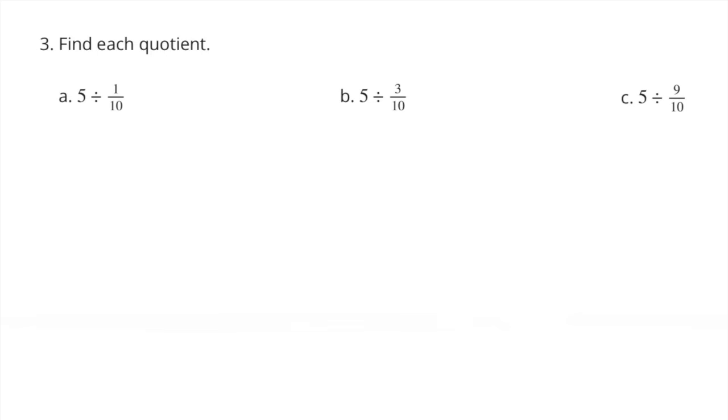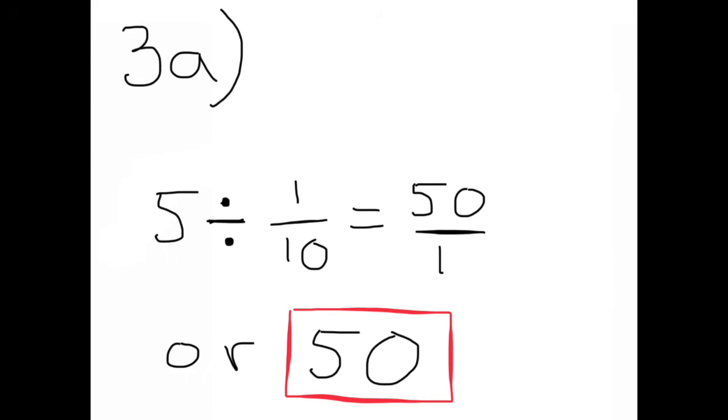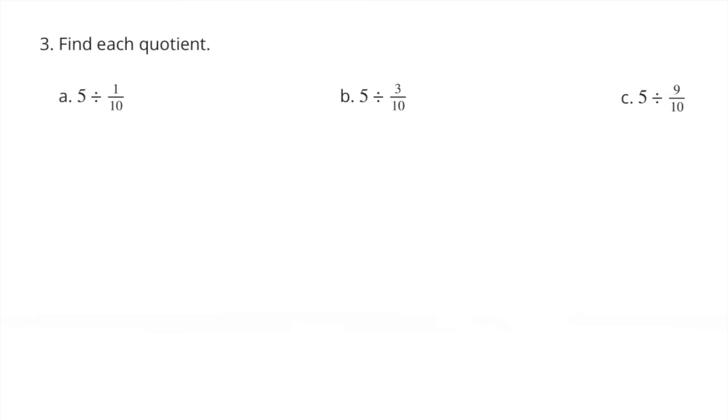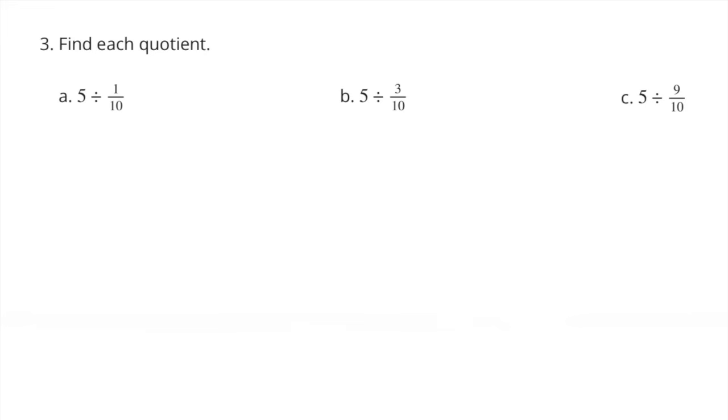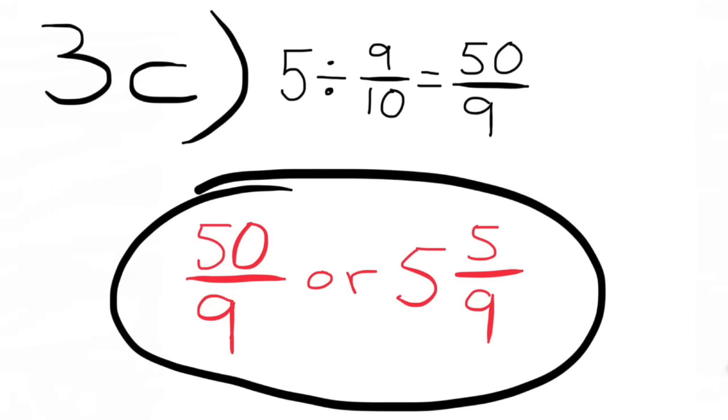Number 3. Find each quotient. Part A: 5 divided by 1 tenth. 5 divided by 1 tenth equals 50 over 1 or 50. 5 divided by 3 tenths. 5 divided by 3 tenths is 50 thirds or 16 and 2 thirds. 5 divided by 9 tenths is 50 ninths or 5 and 5 ninths.